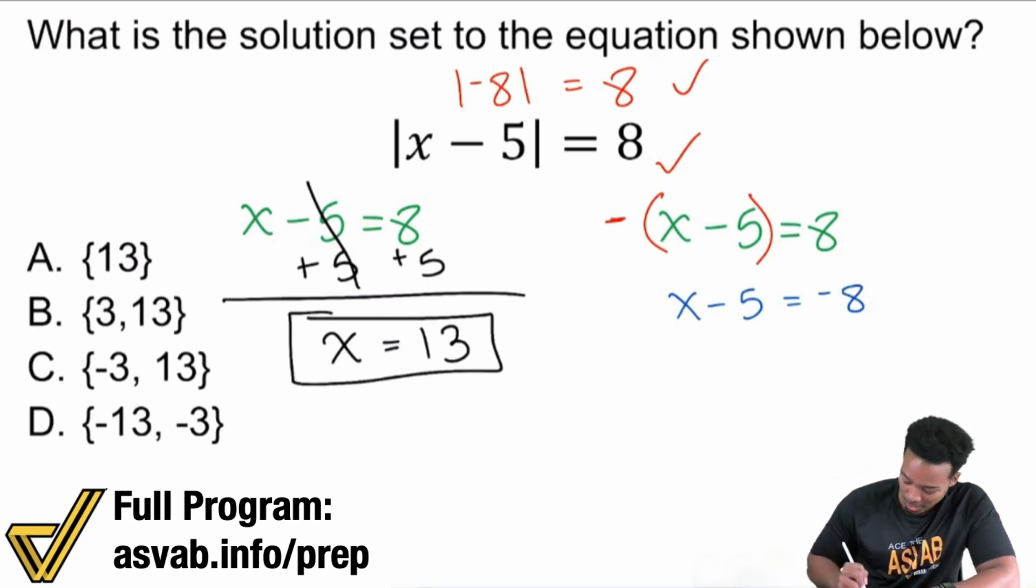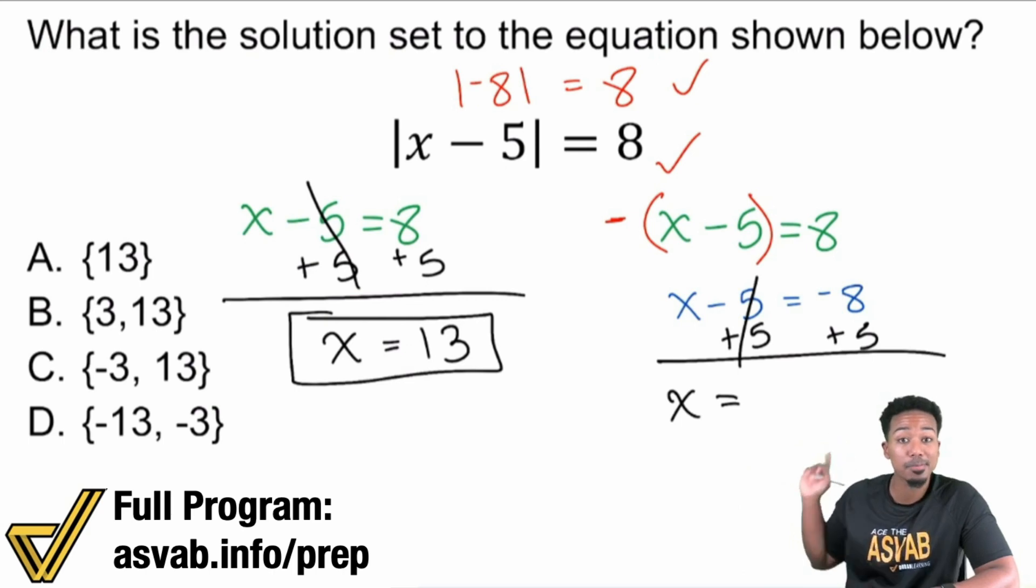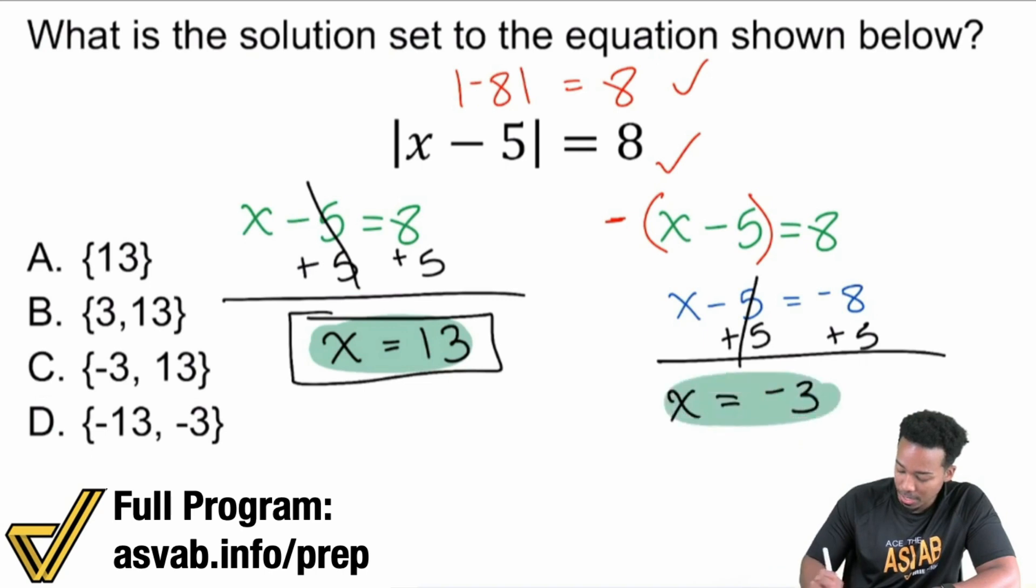So with that said, to solve, all we're going to have to do here is add 5 to both sides. Because once we add that 5 to both sides, booyah cancels out on the left side, and we receive x equals negative 8 plus 5, and that's negative 3. And so our answers are 13 and negative 3, which means C is the answer.